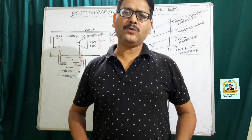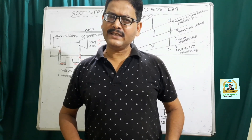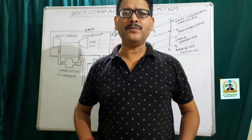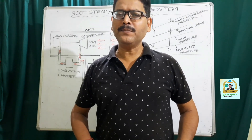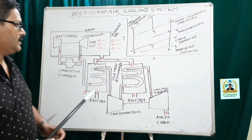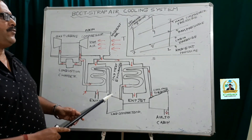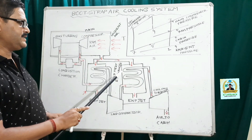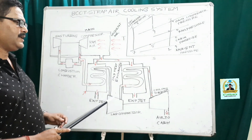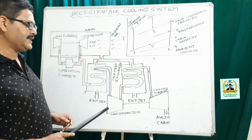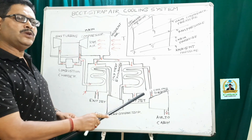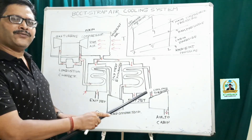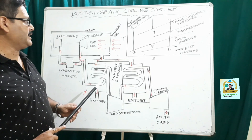The bootstrap air cooling system finds extensive application in transport aircraft and it is actually a modification of the simple air cooling system. So it has all the components of the simple air cooling system, apart from that it does have a second heat exchanger and a second compressor. The cooling turbine instead of driving the airframe actually drives the second compressor.